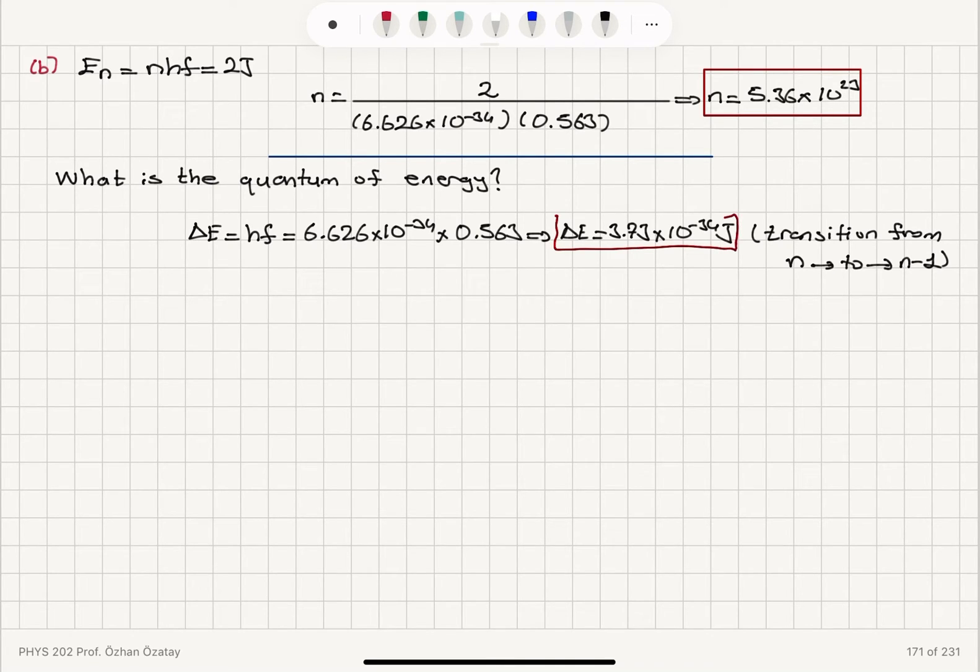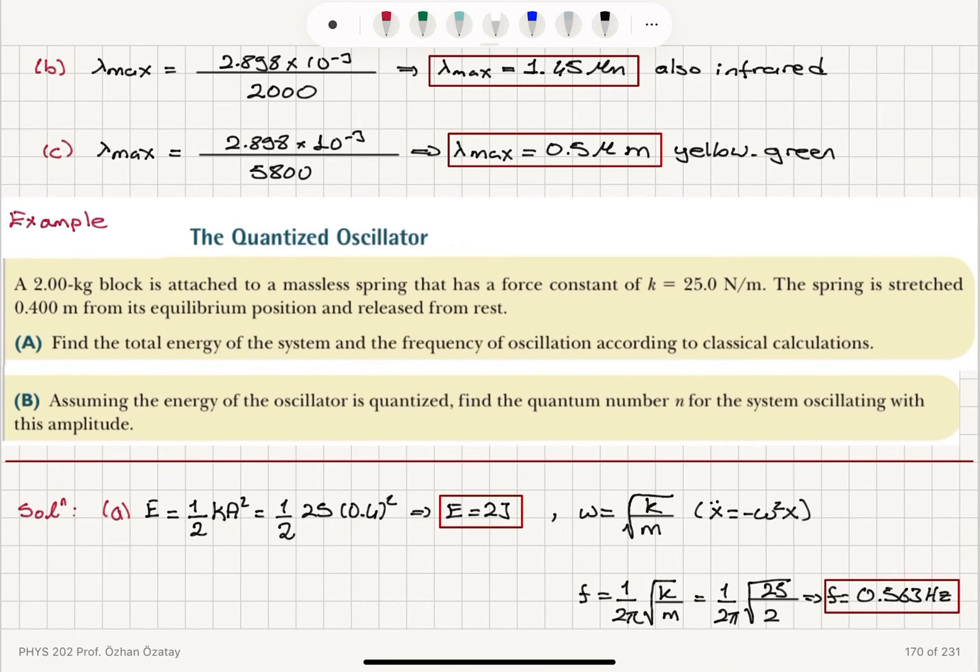And it's very small, as you can see here. We can see the quantization effects only for very small quantum numbers here, n. The quantum of energy is very small compared to the total energy, classical energy of this oscillator.